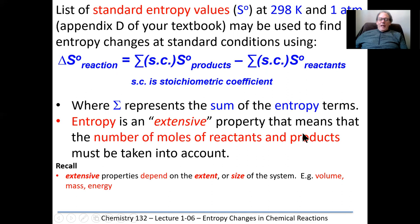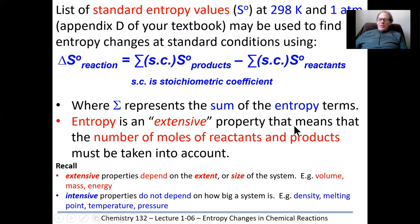Entropy is an extensive property, which means it depends on the number of moles of reactants and products — that's why we use stoichiometric coefficients to calculate it, as opposed to an intensive property. An intensive property does not depend on how big a system is. For instance, a piece of lead has the same density whether it's small or large, because mass and volume both increase proportionately.